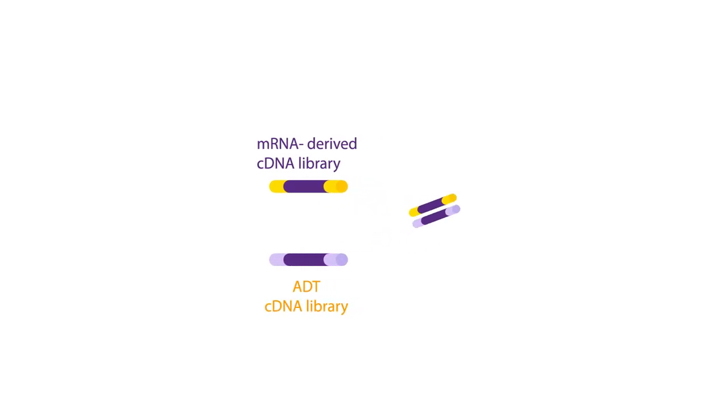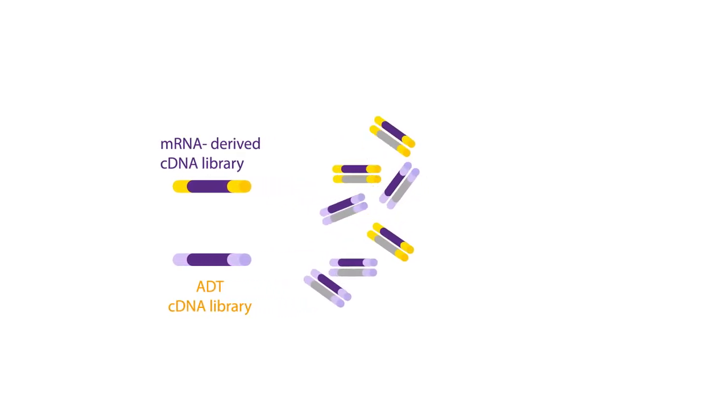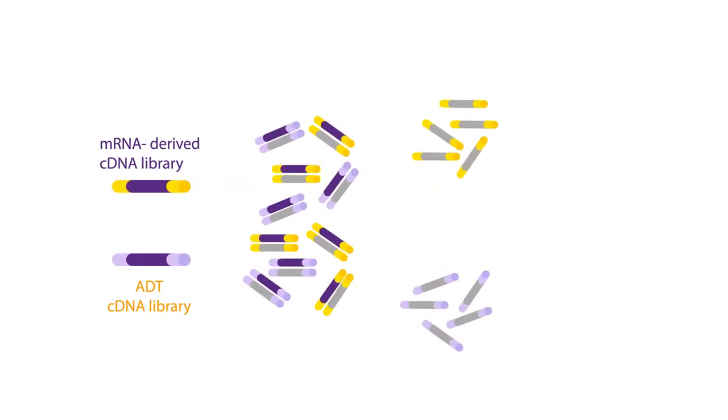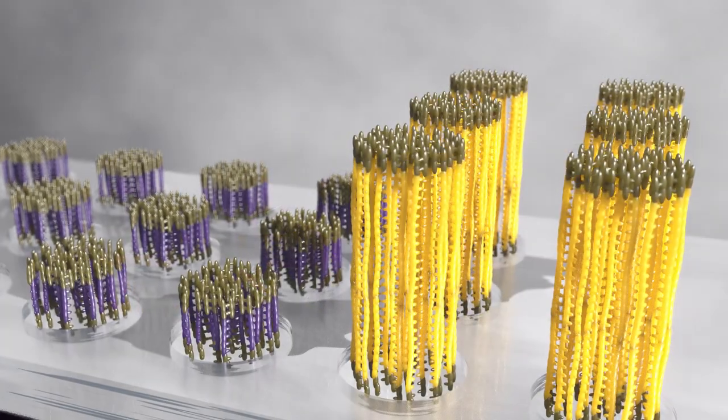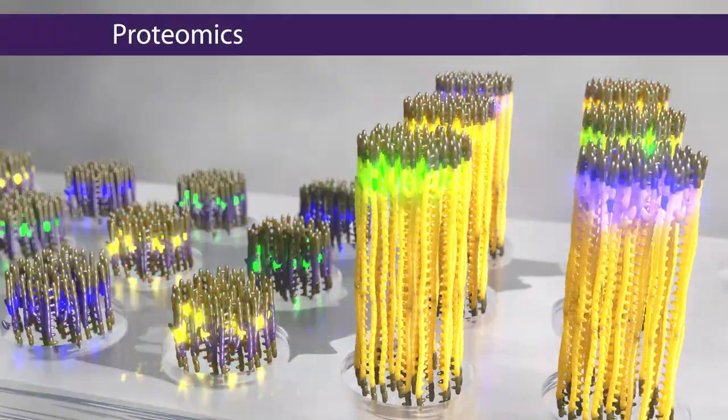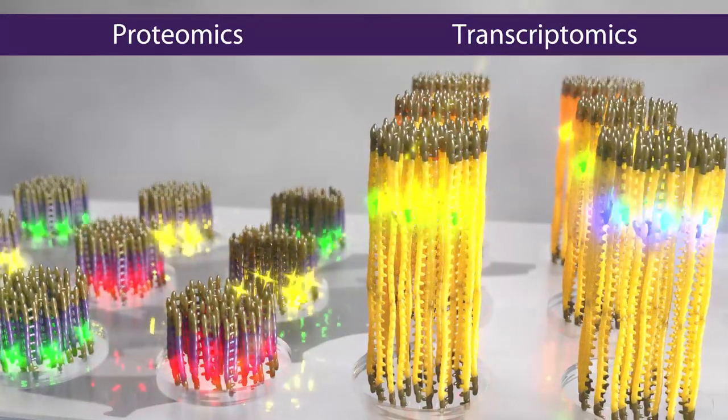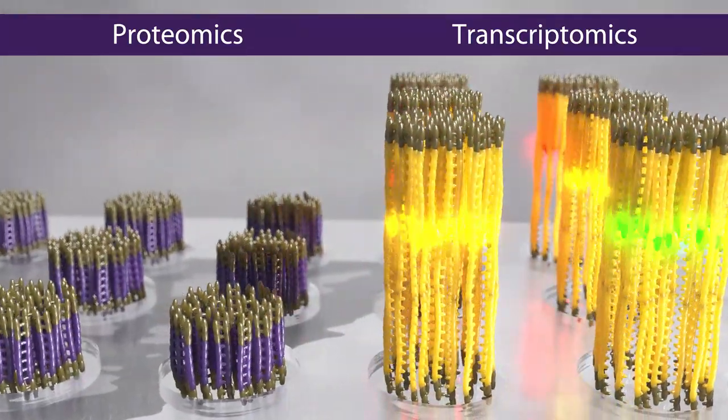Once the two libraries are prepared, they can be pooled at the ratio needed to achieve an optimal read depth for each library. Thus, both proteomics and transcriptomics information can be obtained from a single sequencing run.